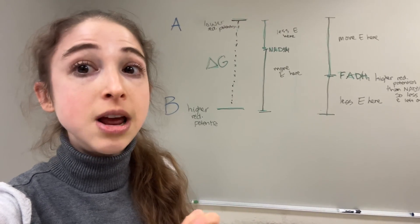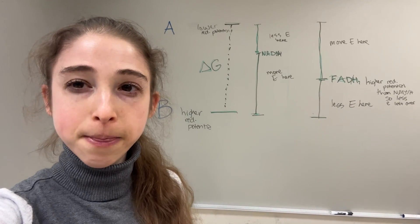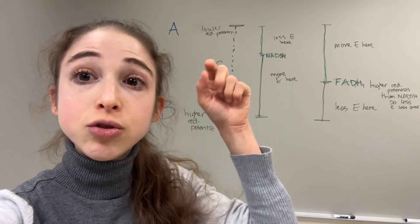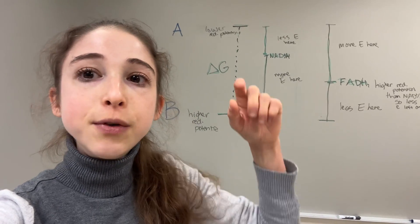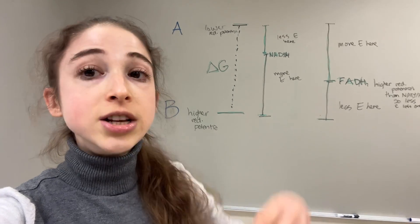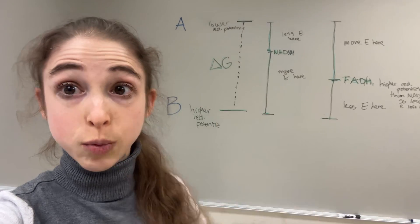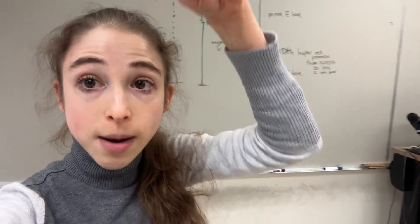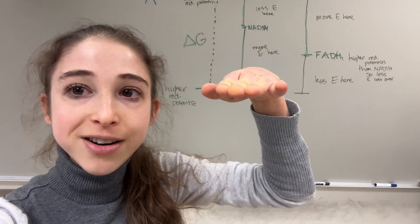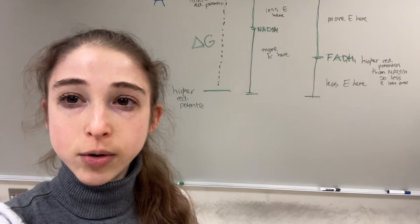We can actually calculate what our delta G would be — how much energy we would get. We get the same amount of energy if we pass directly from A to B as if we pass from A to an intermediate to B. It would be the same difference from where my hands were to where the floor was, even if I dropped them to the table first.